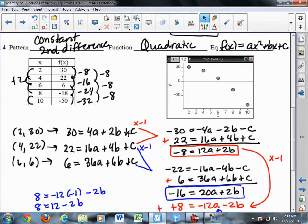Then 22 equals 4 squared times a, 16a, plus 4 times b, plus c. 6 equals 6 squared times a, 36a, plus 6b, plus c.